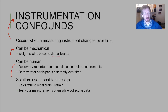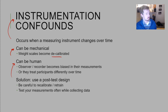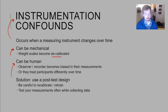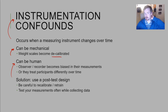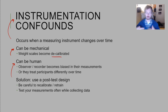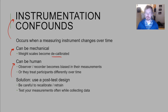Instrumentation confounds can also be human. If you're the researcher observing and measuring how much pasta people eat, but it's been a long day and you're tired, you might miss someone taking a second helping and fail to record it. That is a human instrumentation confound — where you, the recorder or observer, have become biased or inaccurate in your measurements.